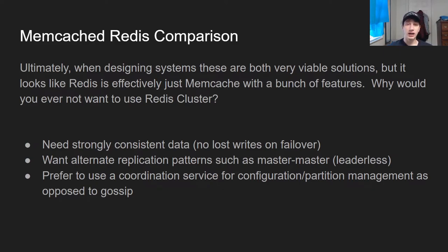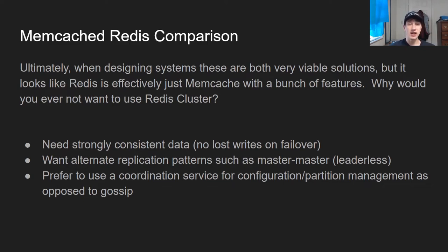In terms of comparison between Memcache and Redis, Redis is basically just Memcache with a bunch of additional features built in out of the box. So why would you ever not want to use it? Well, by virtue of having all these features built in, it makes it harder to diverge from that design pattern. So let's say you needed strongly consistent data — maybe you'd be better off just using Memcache and then building out your own system using something like a coordination service to ensure strong consistency. Maybe you want alternate replication patterns like a leaderless replication schema, which kind of resembles a Dynamo database — then perhaps you'd be better off using Memcache and implementing that yourself. Or maybe you want to use a coordination service for all of that partition management, as opposed to a gossip protocol, because gossip protocol, even though it generally works, is just a little bit harder to reason about sometimes.